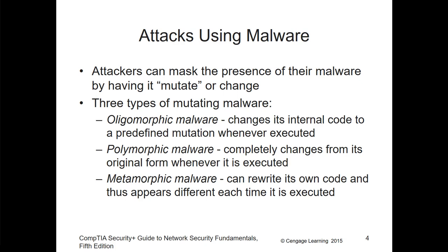An attacker can mask the presence of malware by having it changed or manipulated so it will mimic another program. A common example might be embedding malware in an email, a Word document, or a photo. You send it, they receive the document or photo, and when they open it, they're now infected. You can embed malware in different ways.